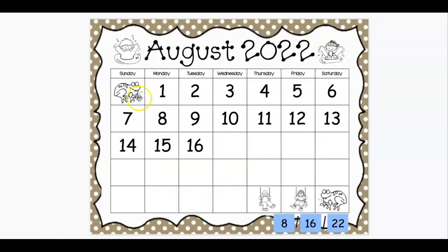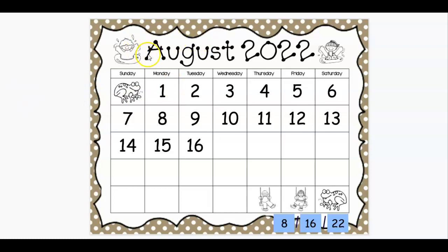All right, who remembers the name of the month? August. Yeah, let's sing our song. January, February, March, and April, May, and June, July, and... August. That's right. September, October, November, December. There's 12 months in a year. Good. So our month is August.